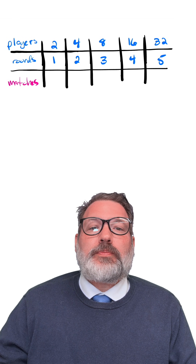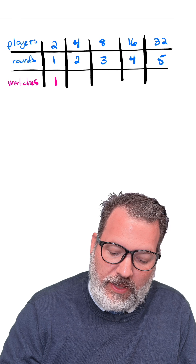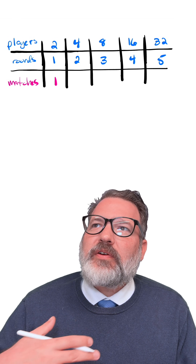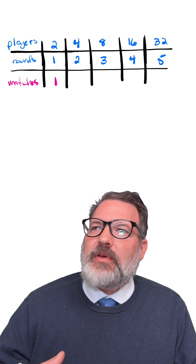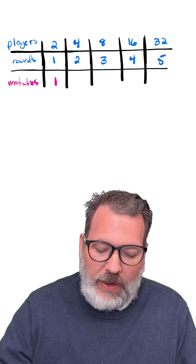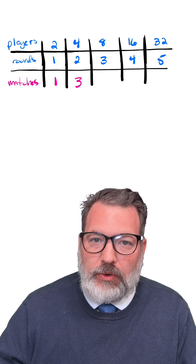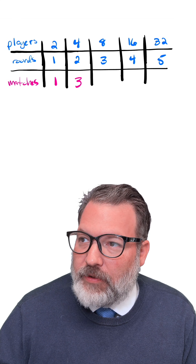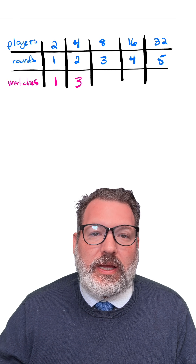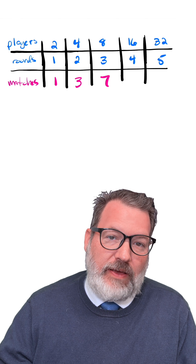Again, if we have two players, they're going to play one match, and the winner of that match is the winner. So at that level, the rounds and the matches match. But if we think to the semi-final round, there would be two semi-final matches plus the one final match, meaning three total matches in those two rounds. And if we zoom out to the quarterfinal round, there are four quarterfinal matches plus two semi-final matches plus one final match, which makes seven.